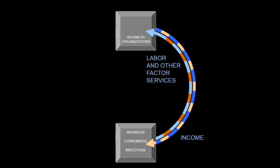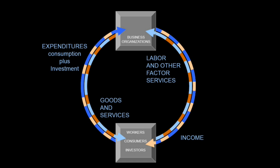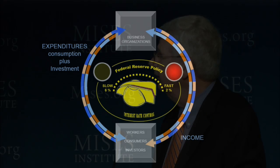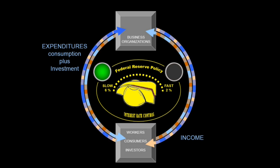That's half the story. If you look at the other half, you get goods and services provided by the business organizations, and you get expenditures by the consumers and some investors to pay for the goods and services. That's the circular flow. It is circling in opposite directions — the money and the real factors in the economy.